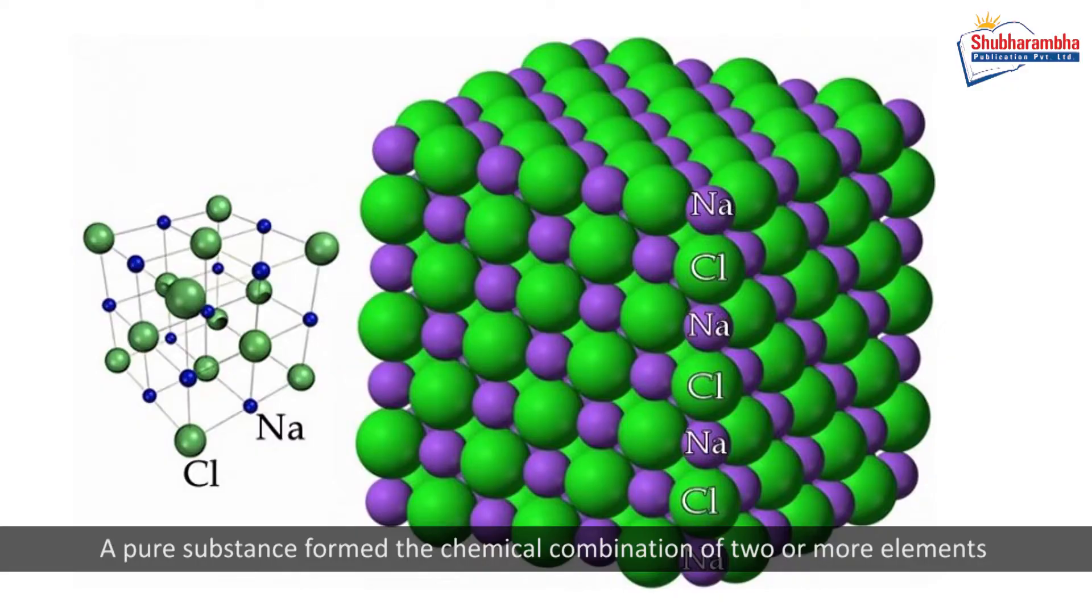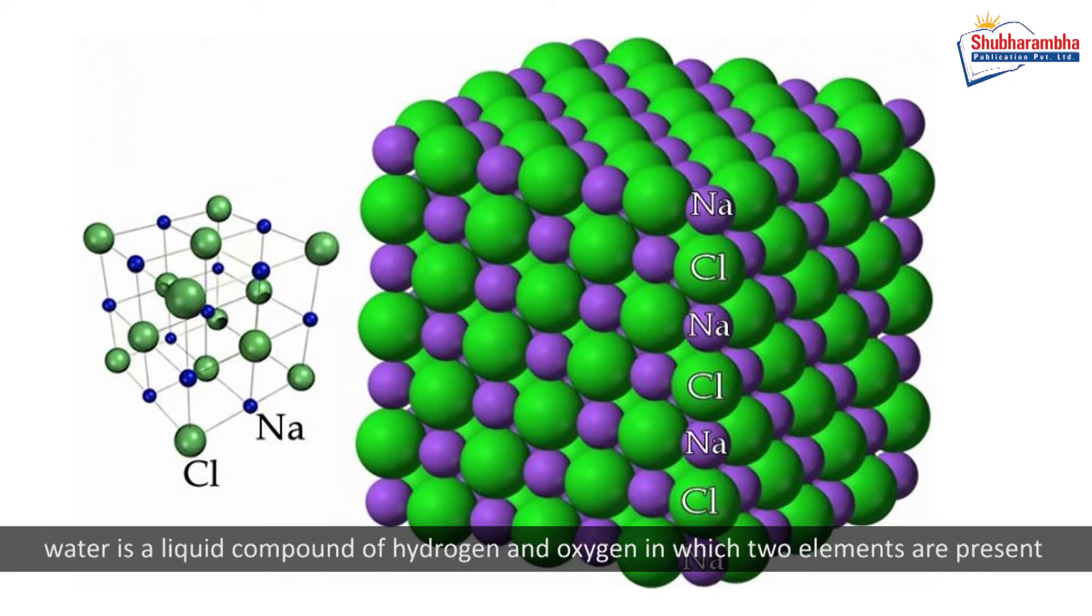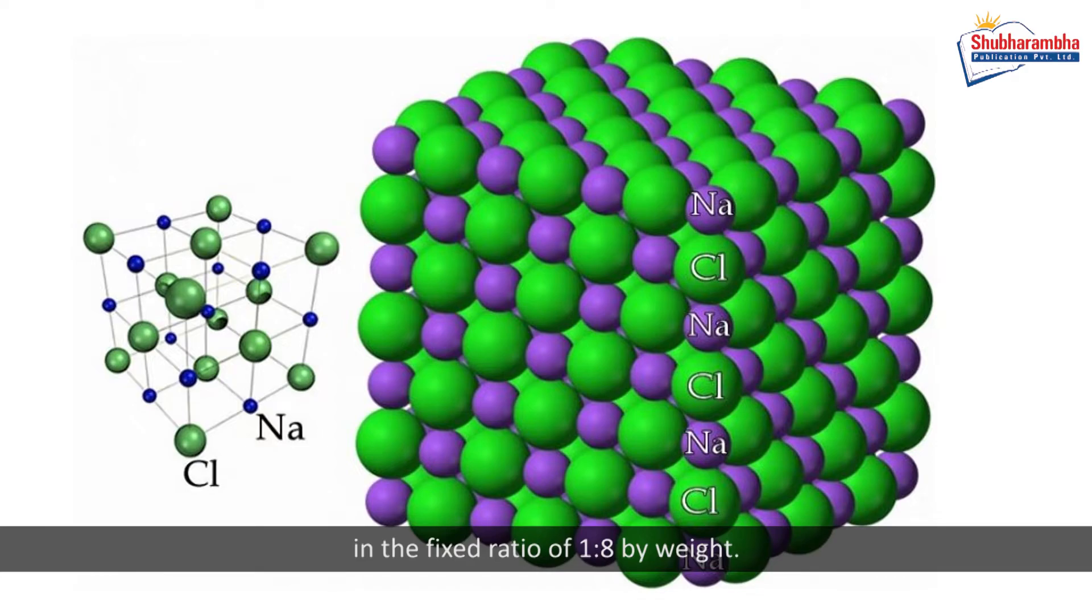Compound. A pure substance formed by chemical combination of two or more elements in a fixed ratio by weight is called a compound. Water is a liquid compound of hydrogen and oxygen in which two elements are present in the fixed ratio of one to eight by weight.